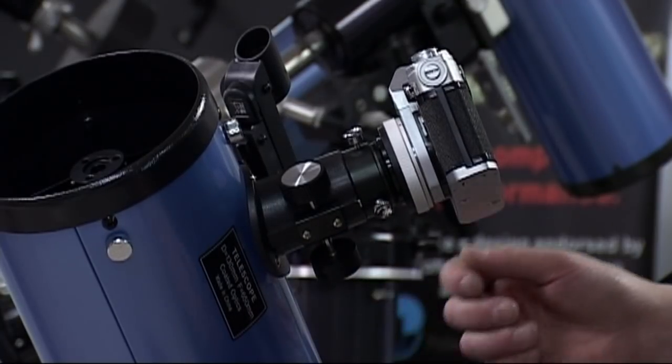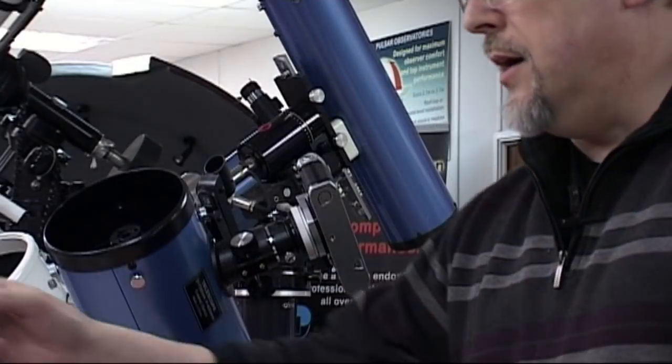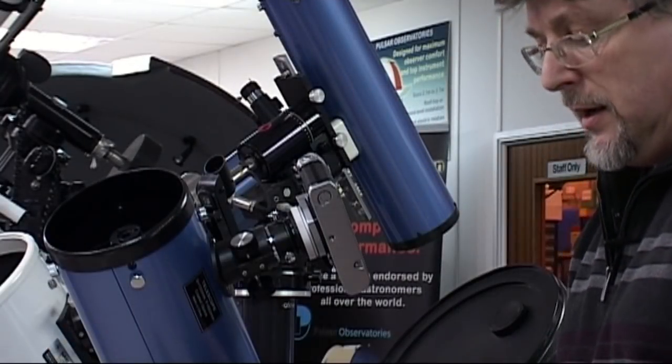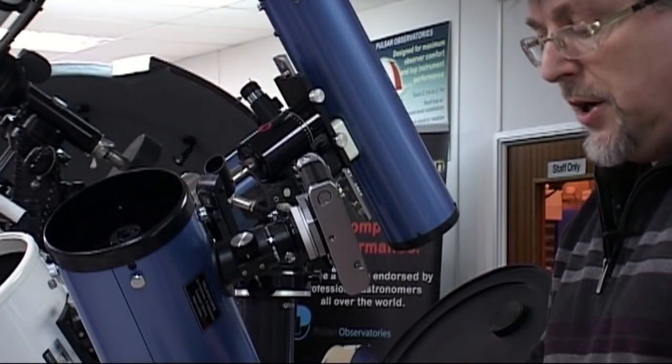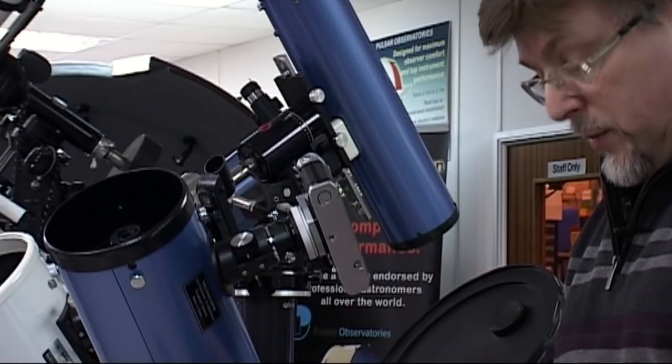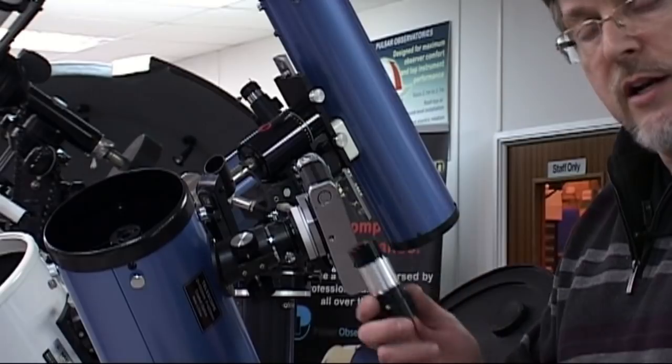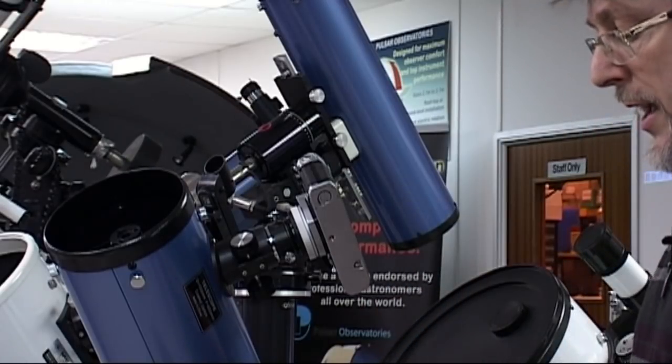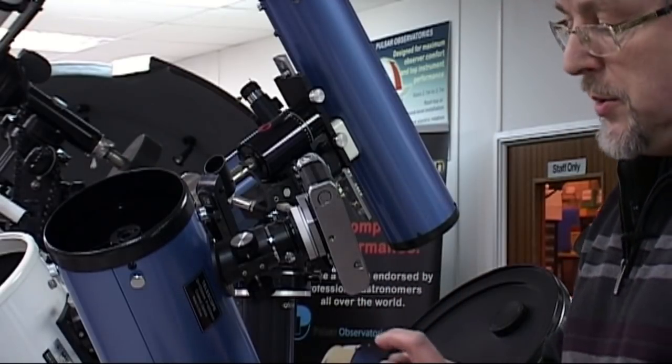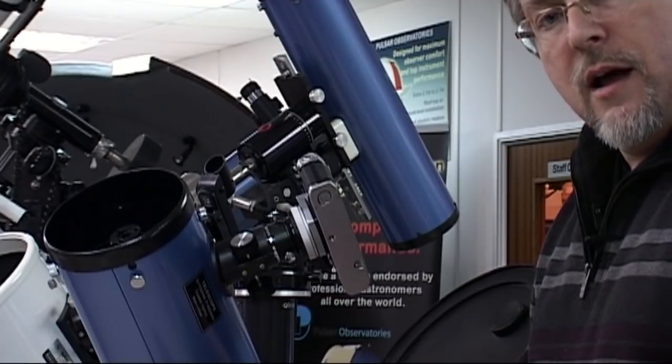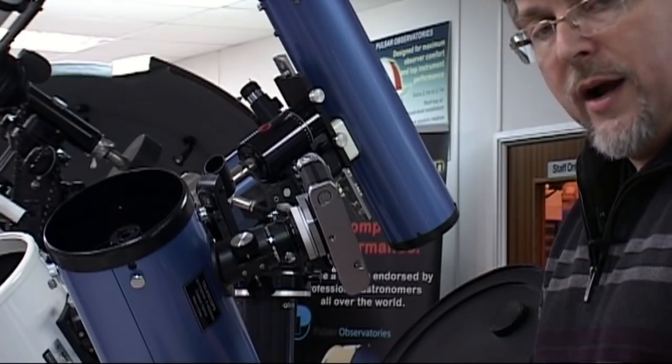So what do we do, how do we correct that? Well this is where our trusty Barlow lens comes to our rescue. Now we've shown you in other videos how useful the Barlow is, and it's really going to show its colors here because it really is a useful gadget. Now the one we've got here is a two speed Barlow - it's one that's got a 1.5 magnification factor and also a two times magnification factor.